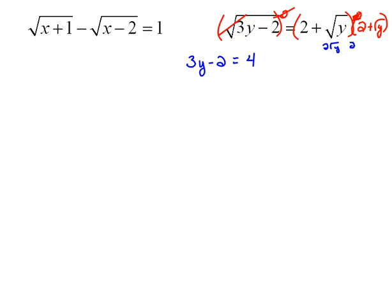And then my outer terms would add 2 square roots of y, the inner terms would add 2 square roots of y, so altogether that would be 4 square roots of y. And then the last terms, square root of y times the square root of y, would just be y.